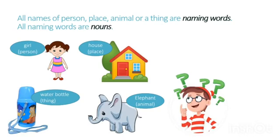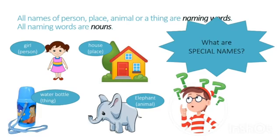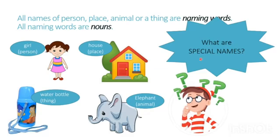I wonder, if these are naming words, then what are special names? A woman — name of a person. Elephant — name of an animal. If all of these are naming words, then what do we call special names?